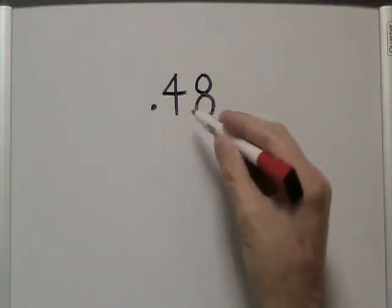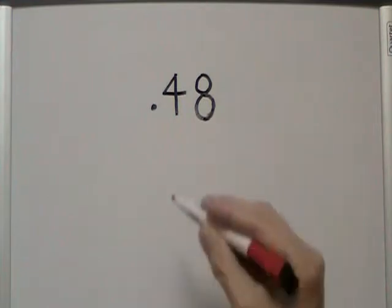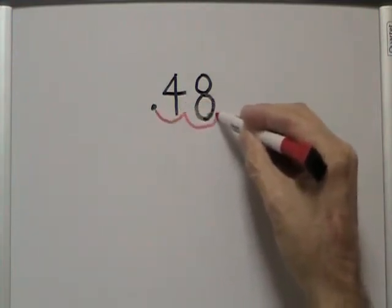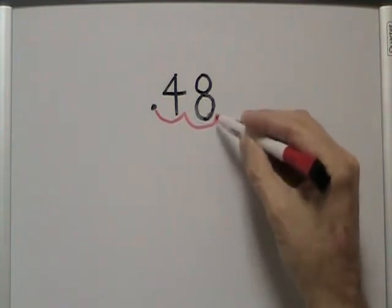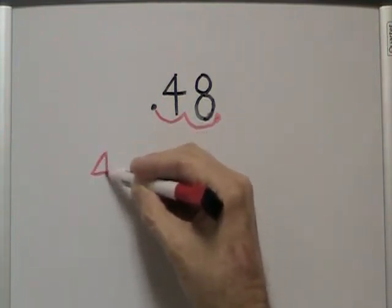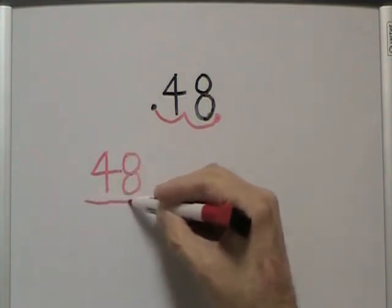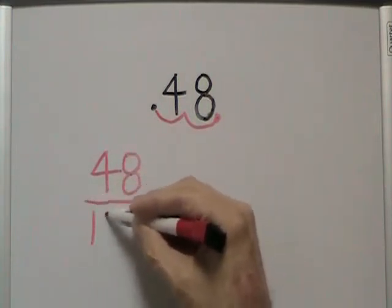In order to change 0.48 into a fraction in simplest terms, we're going to move the decimal two places to the right. In doing so, we've created a whole number. We no longer need our decimal, so we rewrite the number as 48. Put our fraction bar and our denominator of 100.